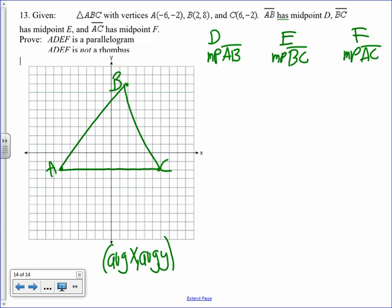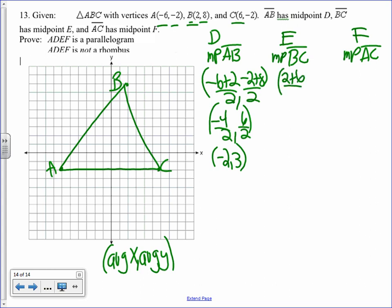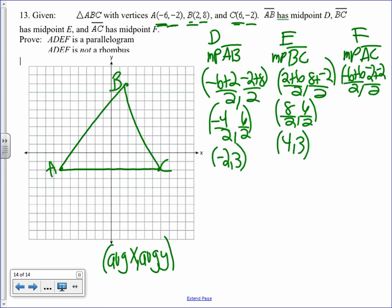To find the average of two numbers, I add the coordinates together. So for my x's for AB, I have negative 6 plus 2 over 2, and for my y's I have negative 2 plus 8 over 2. That's negative 4 over 2, 6 over 2, negative 2 comma 3. BC: 2 and 6 for my x's, 8 and negative 2 for my y's. 8 over 2, 6 over 2. 4 comma 3. Finally for AC: negative 6 and 6, negative 2 and negative 2. That's 0 over 2, that's negative 4 over 2. That's 0 comma negative 2.